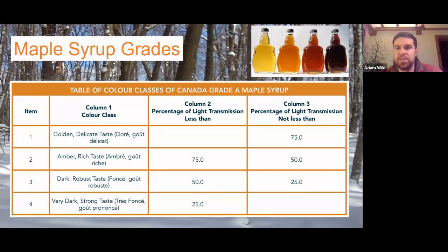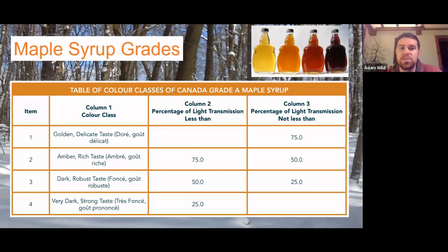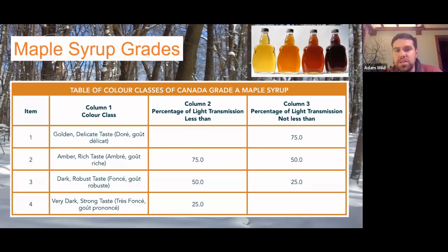Everyone has their own preference — some people like really light syrup, some like darker. Customers who love very dark syrup, the stronger the better. Especially if you're doing a lot of cooking and baking with maple syrup, the darker is typically better because that stronger flavor profile comes through. The new grade standards: the lightest is golden color with a delicate taste, then amber with a rich taste, then dark with a robust taste, then very dark with a strong taste.